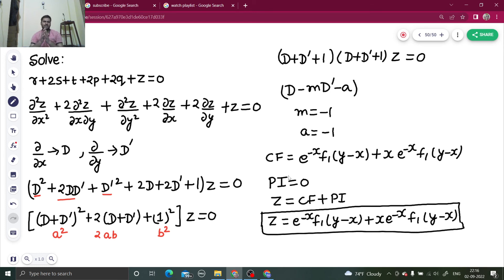So again, from r, s, and t form to del form, and from del to D form. After you got that, it was clear that you will first factorize this and then compare to D minus m D dash minus a, and then you will write your complementary function.